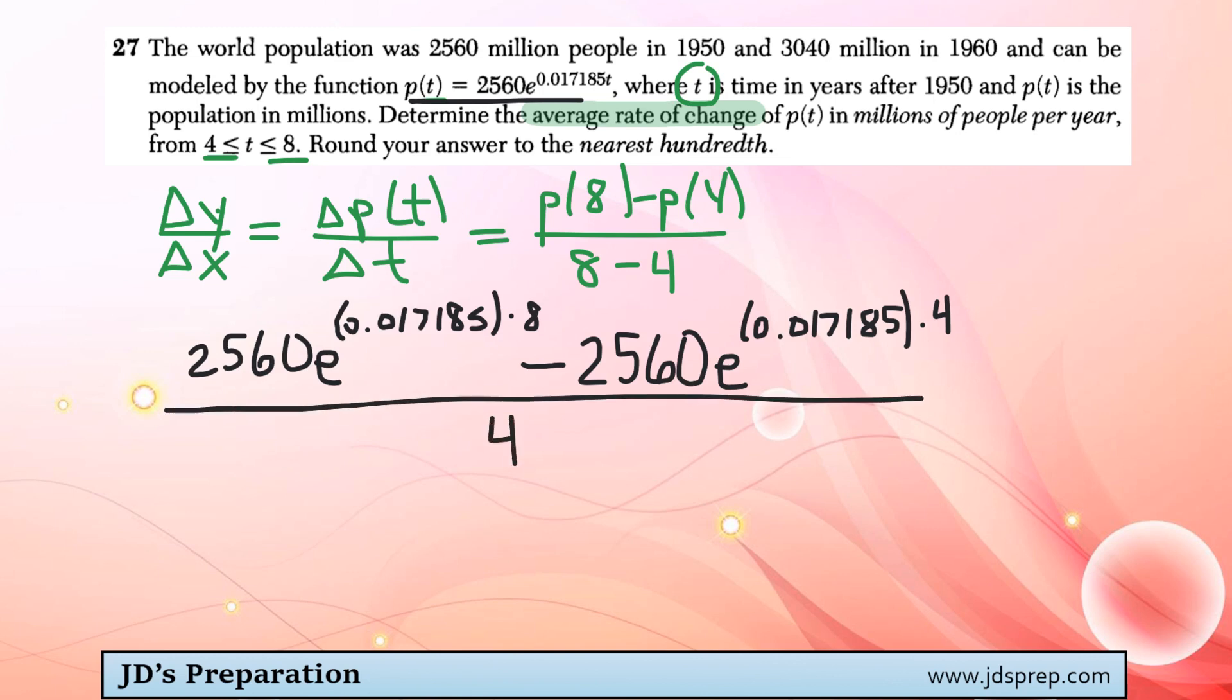which is 4. So after very carefully inputting this into your calculator, you should get a rounded answer to the nearest hundredth of 48.78.